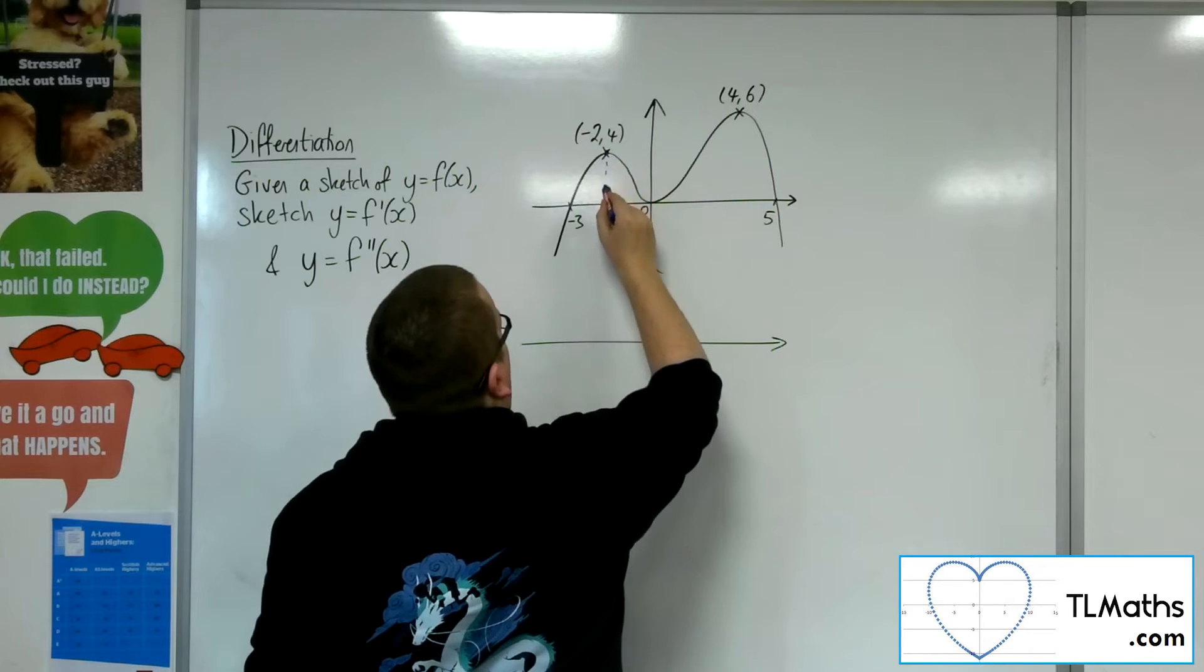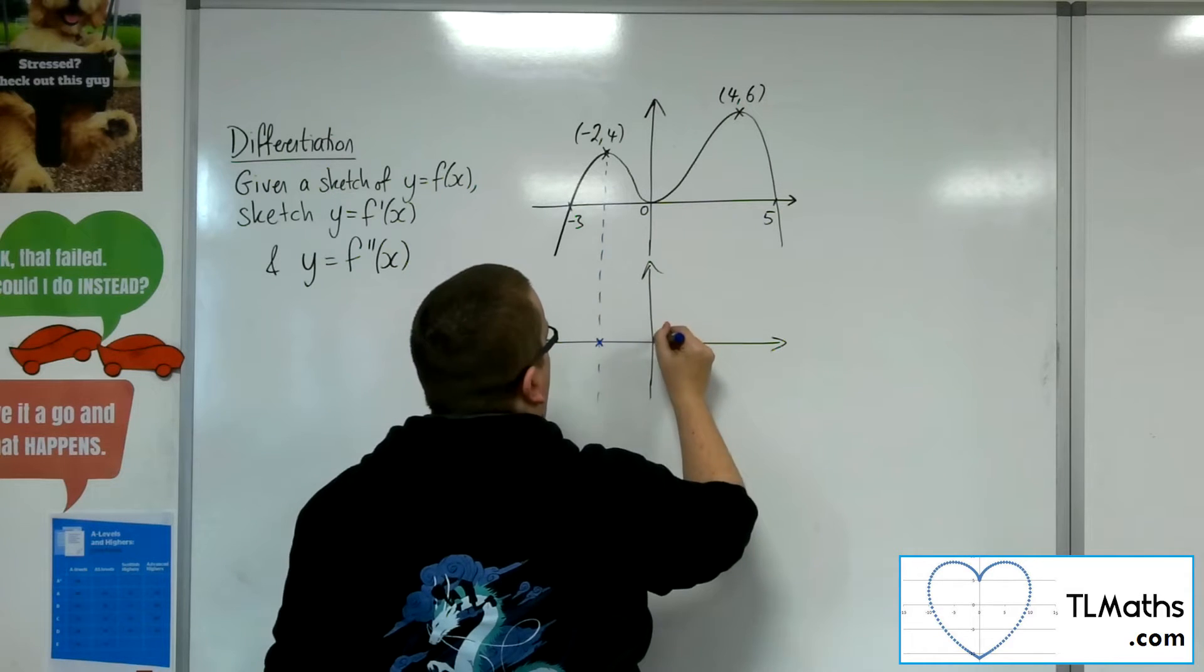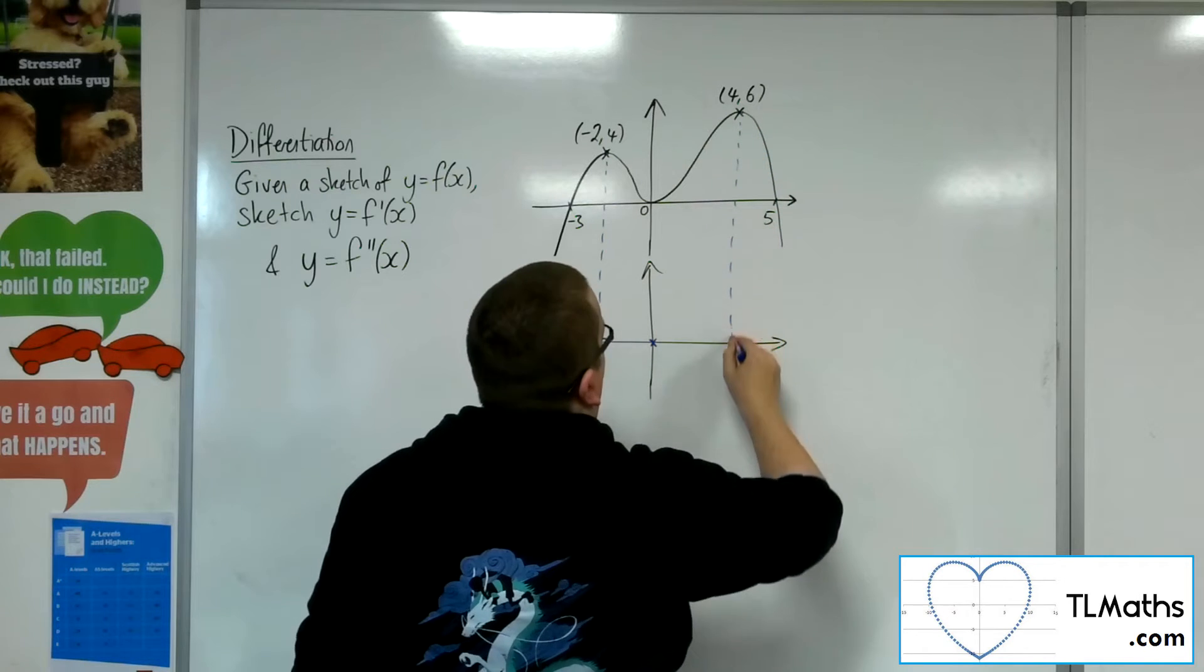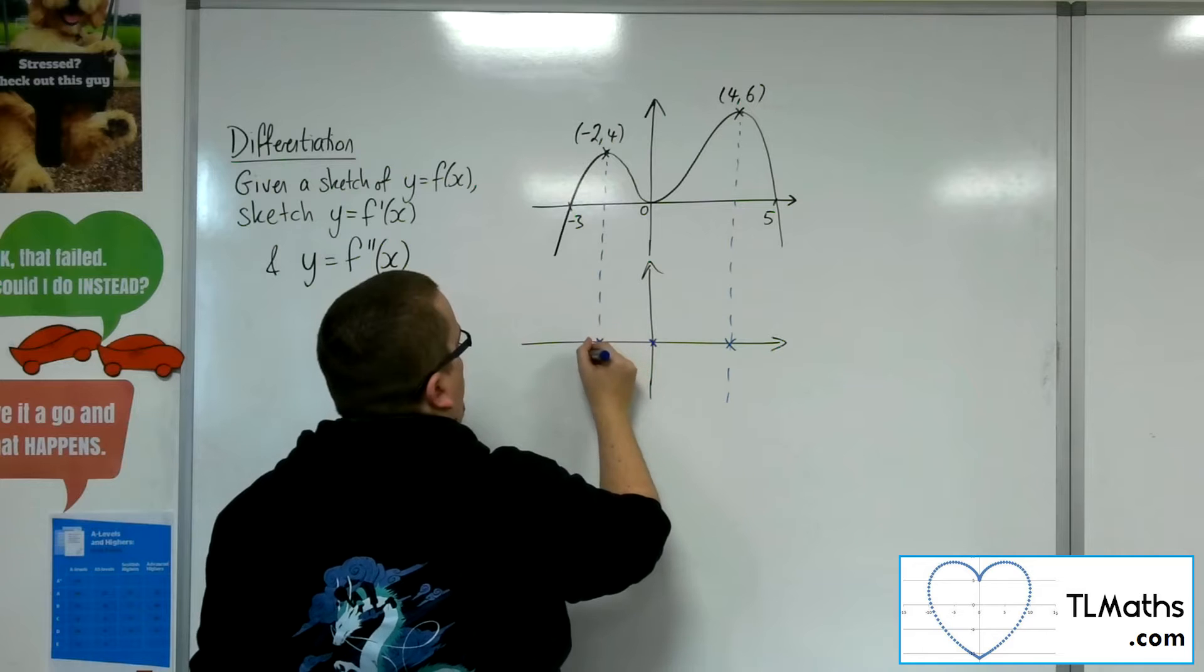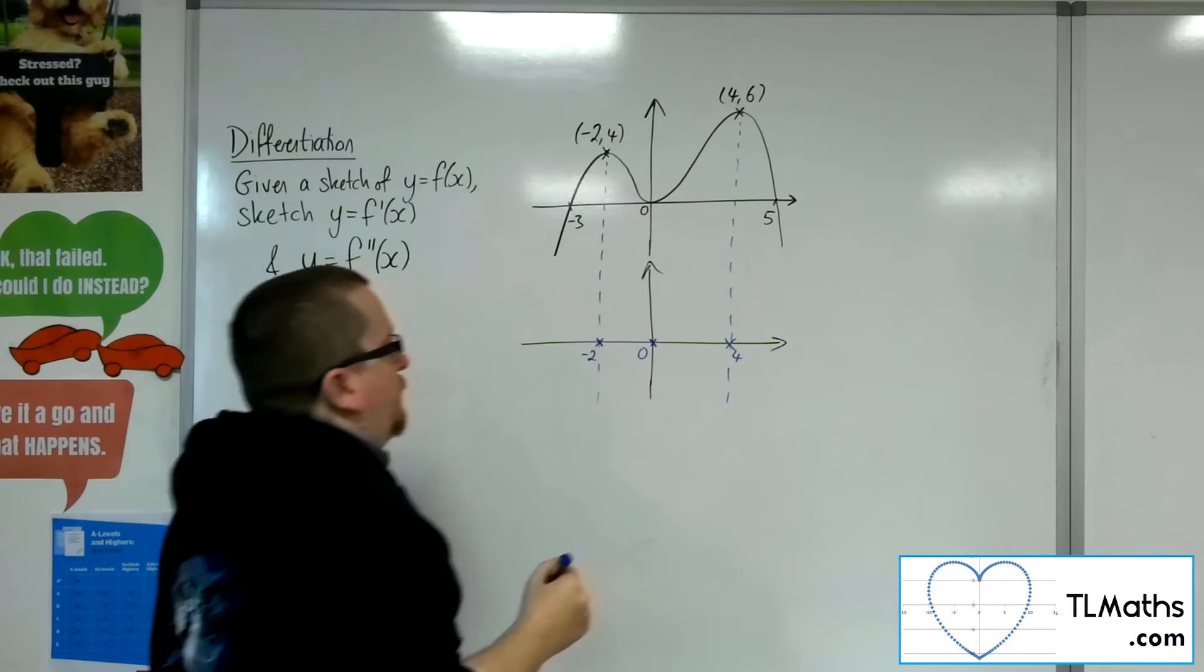So if I do some dashed lines, I then know that that is where it is crossing the x-axis for the gradient function. So that's minus 2, and there's 4, and there's 0.